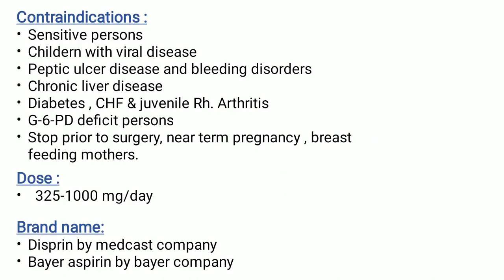Contraindications: it should not be given to sensitive persons, children with viral disease, peptic ulcer disease and bleeding disorders, chronic liver disease, diabetes, CHF, juvenile rheumatoid arthritis, G6PD-deficient persons, stop prior to surgery, near-term pregnancy, and breastfeeding mothers. Its dose is 325 to 1000 mg per day. Its brand names are Disprin by Medcast Company and Bayer Aspirin by Bayer Company.